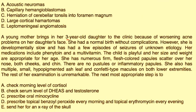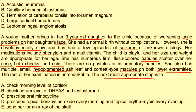Next vignette: A young mother brings her 3-year-old daughter to the clinic for worsening acne problems on the daughter's face. She had a normal birth, but is developmentally slow and has had a few episodes of seizures of unknown etiology. Medications include phenytoin and a multivitamin. She has numerous firm, flesh-colored papules scattered over her nose, both cheeks, and chin — no pustules or inflammation. She also has multiple small hypopigmented ash leaf and confetti-type macules on both lower extremities. A child with seizures and characteristic skin findings makes me think of tuberous sclerosis, so the first diagnostic step is imaging — and because she has seizures, I would look at the head first. An x-ray of the skull would be an appropriate choice.